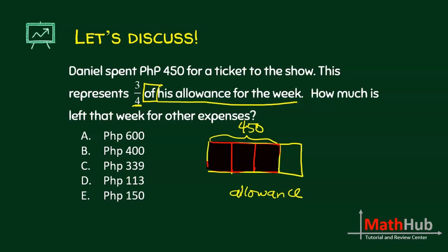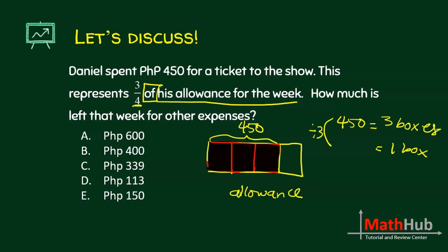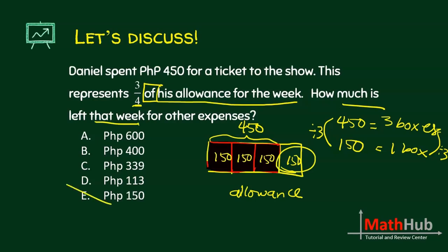Our goal is to always determine the value inside each box. Since 450 is for 3 boxes, we divide by 3 and the amount in each box is 150. But the question is how much is left that week — the remaining 1 box is left for other expenses. The answer is letter K.